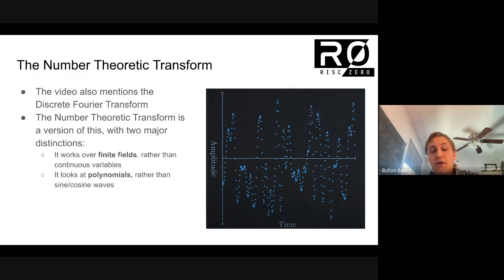The other major distinction is that the concept of sine waves or cosine waves is replaced by polynomials. You have a composition of sine waves, or you can have an addition of a bunch of polynomials. It turns out that polynomials are the right analog for a sine wave when you're talking about finite fields.